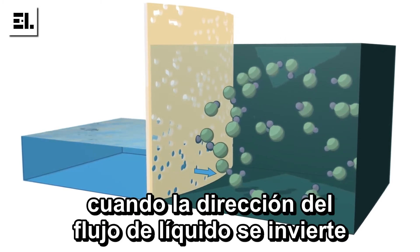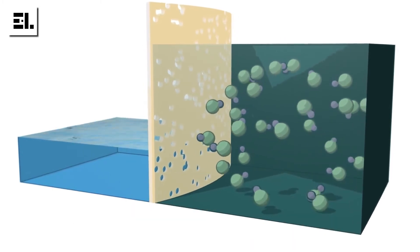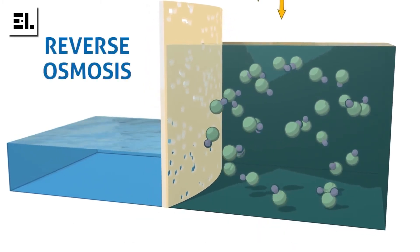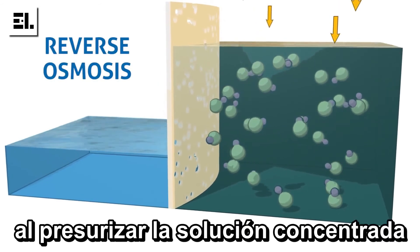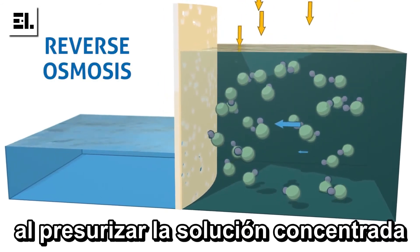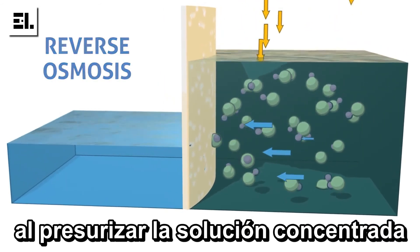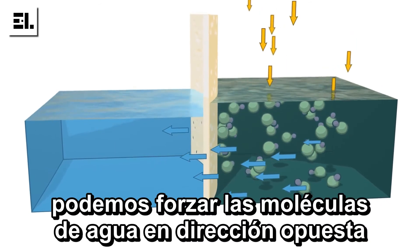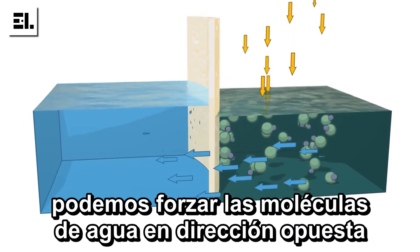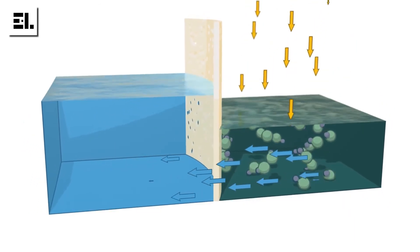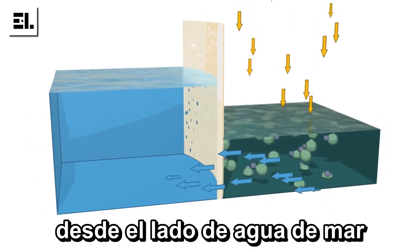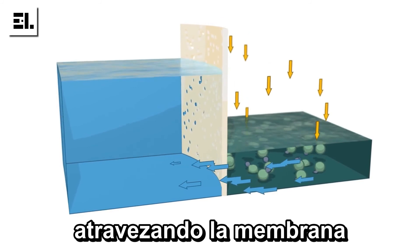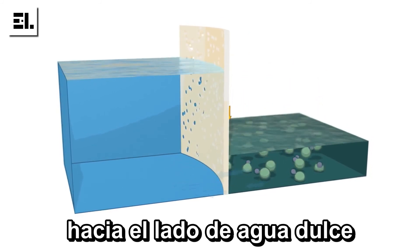When the direction of liquid flow is reversed, it's called reverse osmosis. By pressurising the concentrated solution, in this case seawater, we are able to force water molecules in the reverse direction, from the salty seawater side through the membrane to the fresh water side.